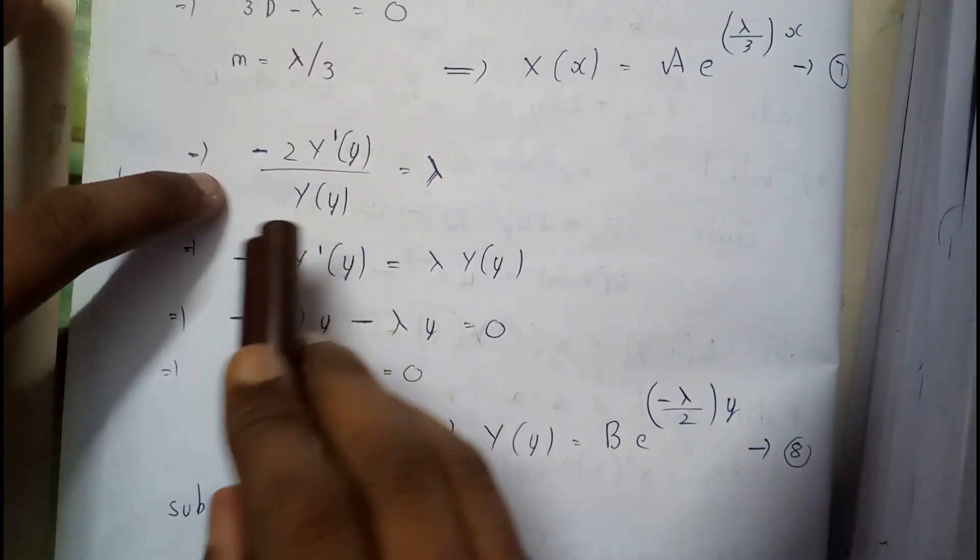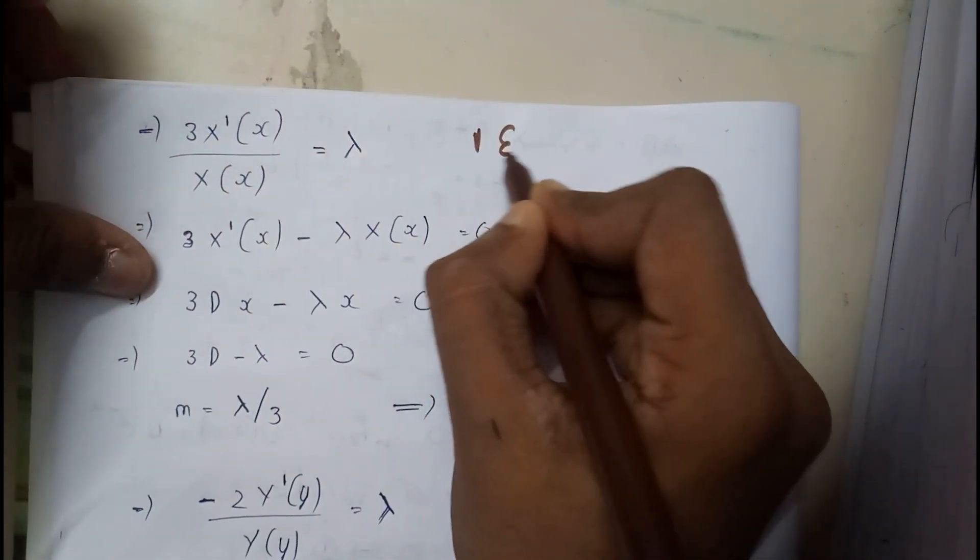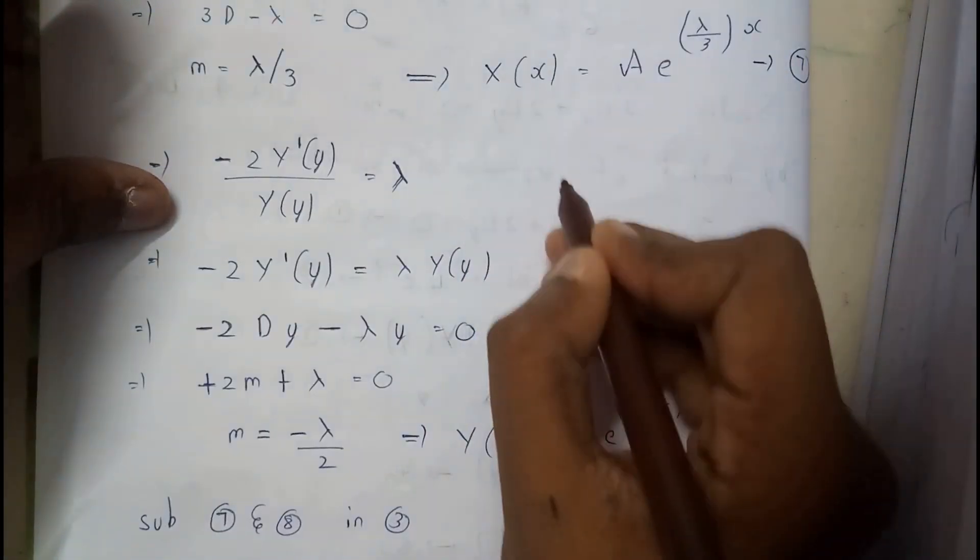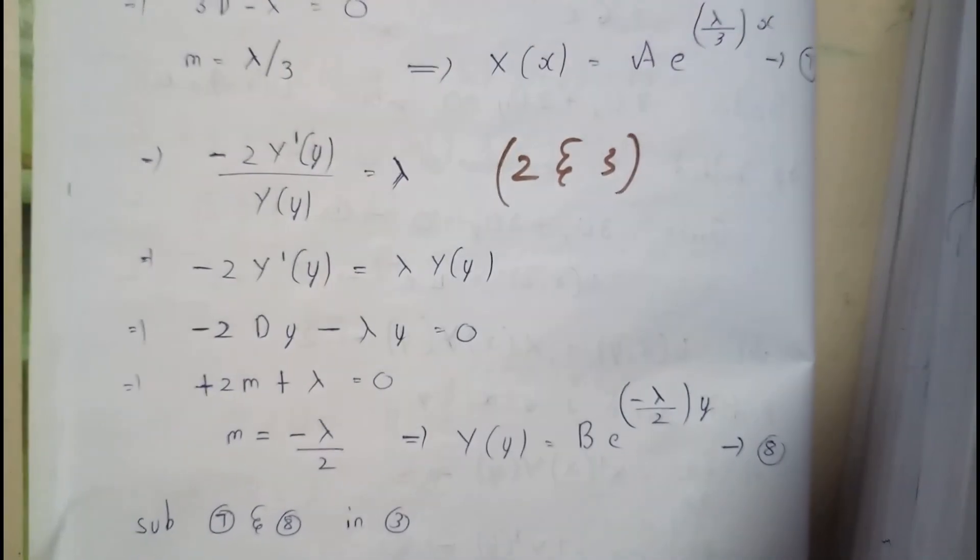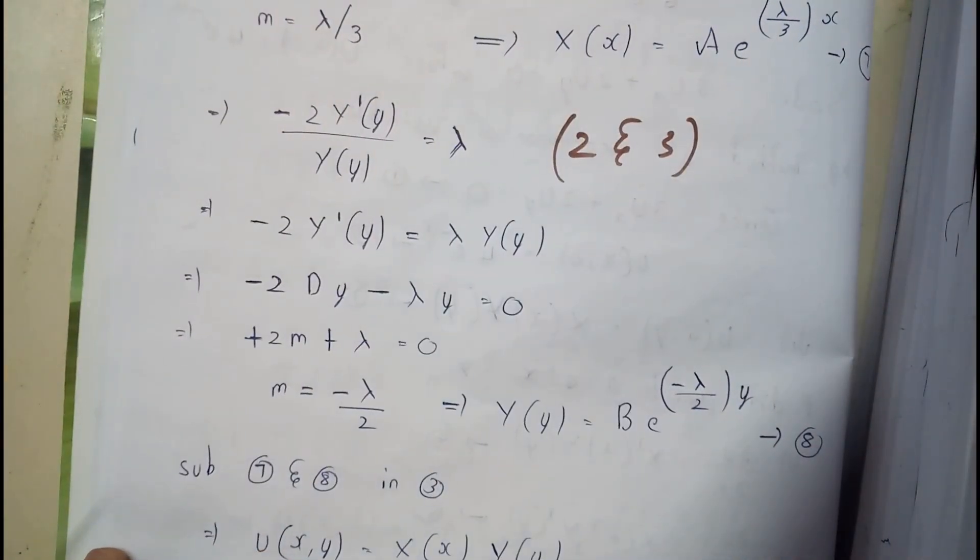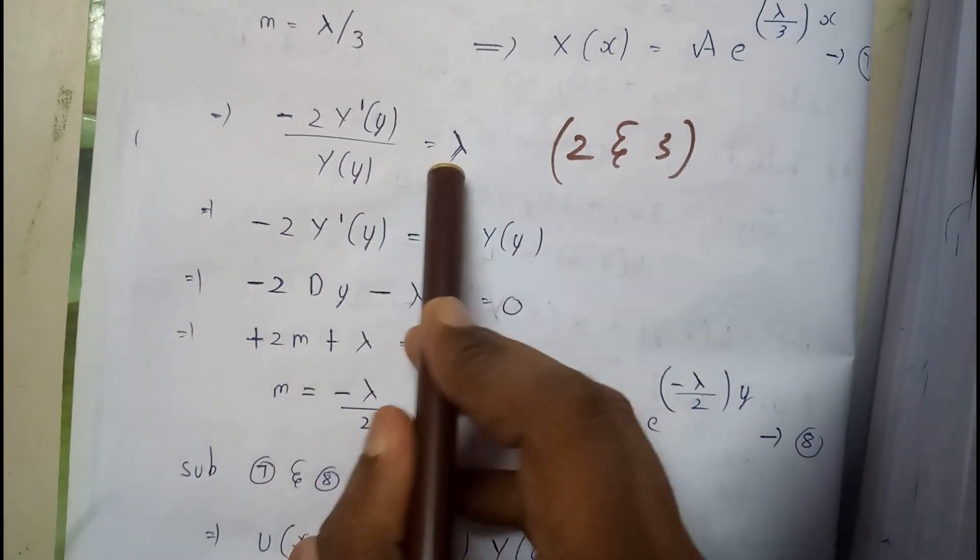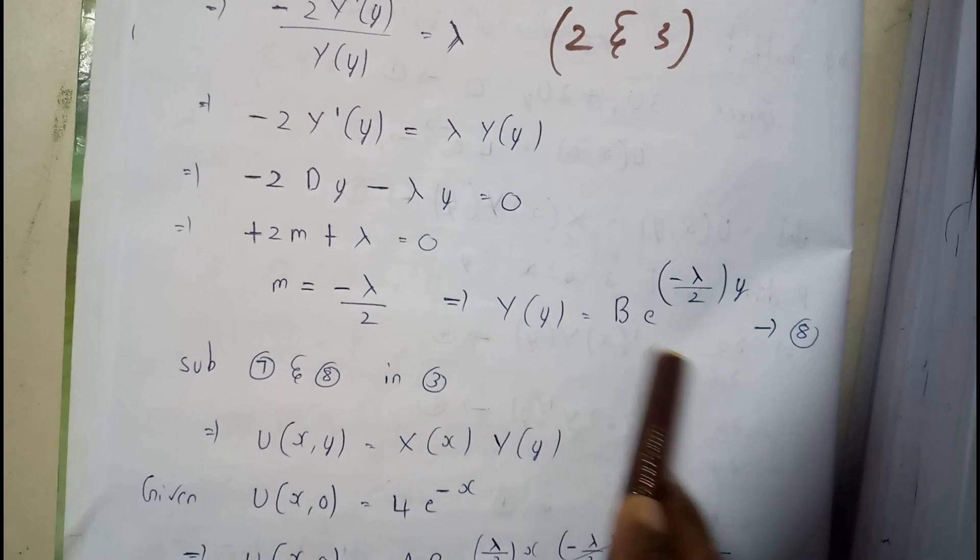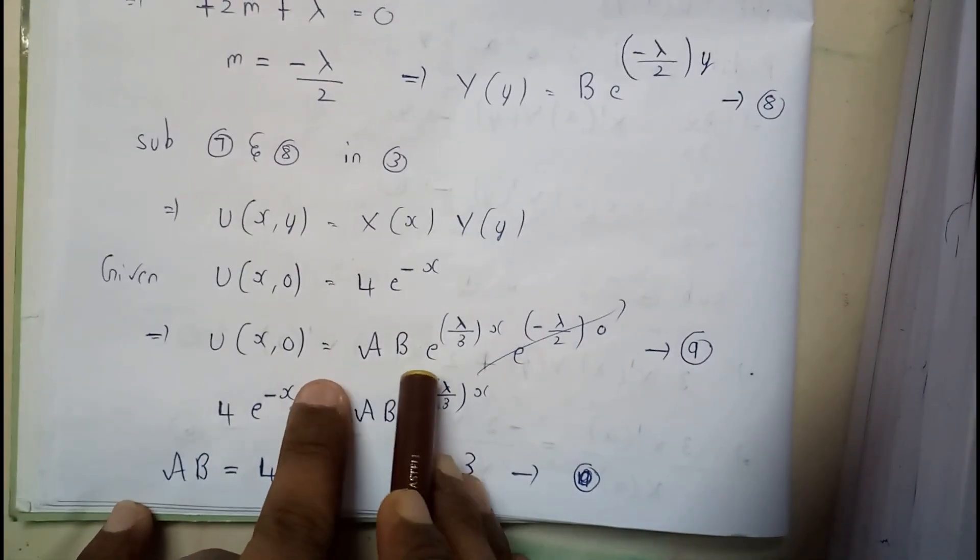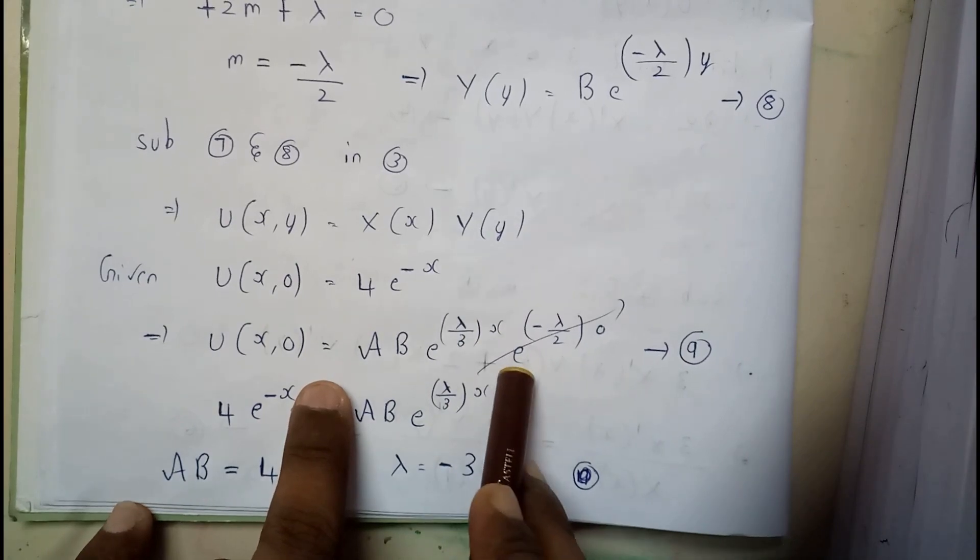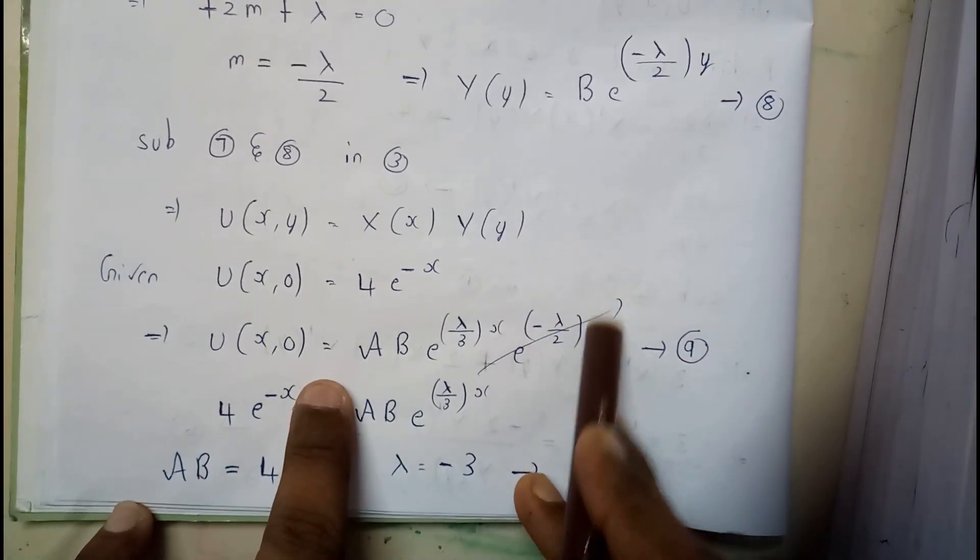Similarly, the second and fourth term - first and third term, and second and third term. Now we will just solve it to get the m value again. Multiplying them, I got AB e^(lambda x/3) times e^(-lambda t/2).